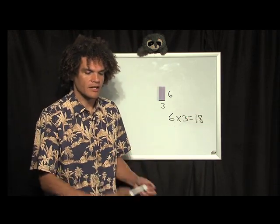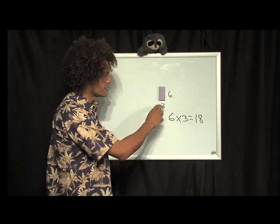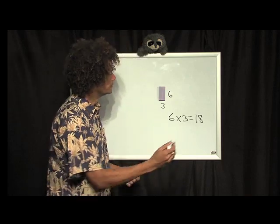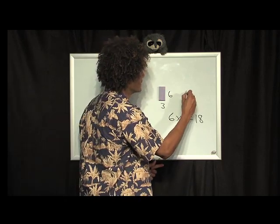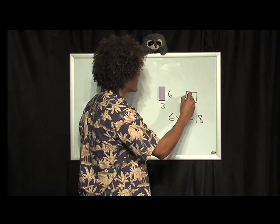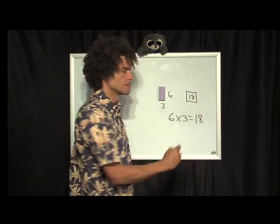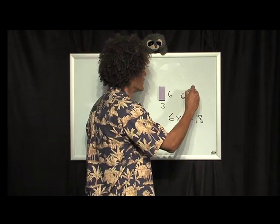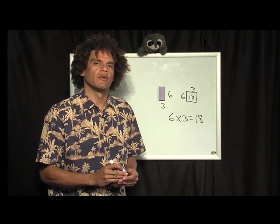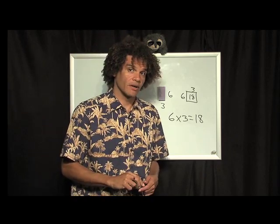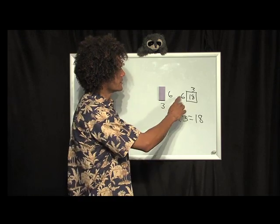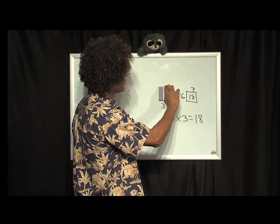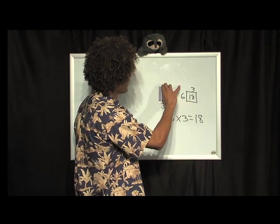Six taken three times is the same thing as eighteen. Young children discover for themselves that three taken six times is also eighteen. If I make a rectangle and the whole thing is eighteen, one side is six, the other side must be three. We can see here that multiplication and division really are inverse functions. Can you see that six is contained in eighteen three times? Here they are: one, two, three.